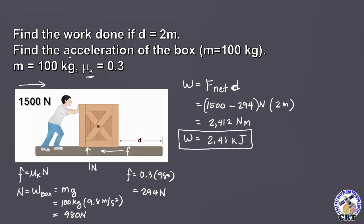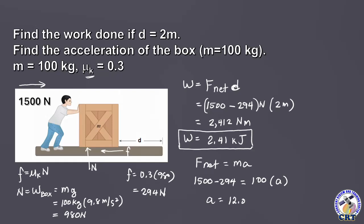The next requirement is to calculate or find the acceleration. To find the acceleration using Newton's second law of motion, F net equals mass times acceleration. F net is 1,500 minus 294, equals mass of 100 kilograms times A, the acceleration. Solving for the acceleration: 1,500 minus 294, divided by 100, this will give us 12.06 meters per second squared.